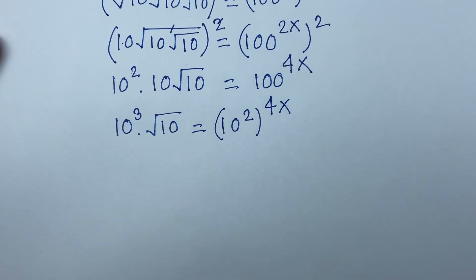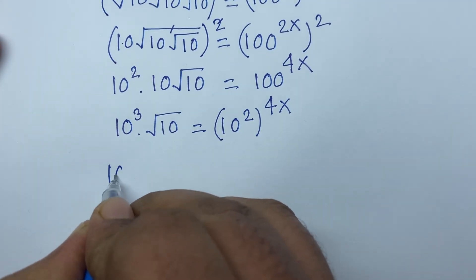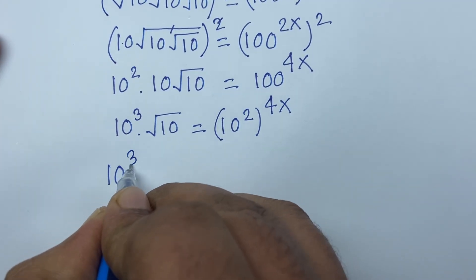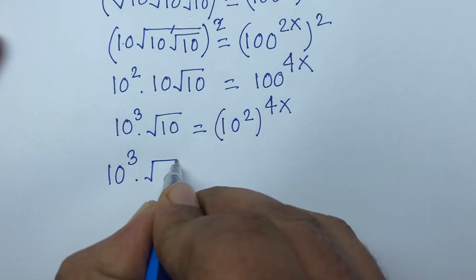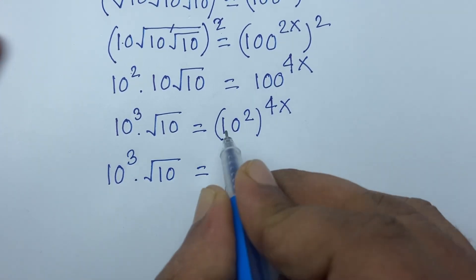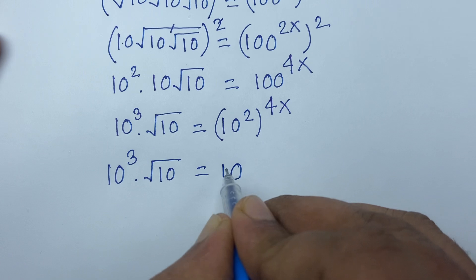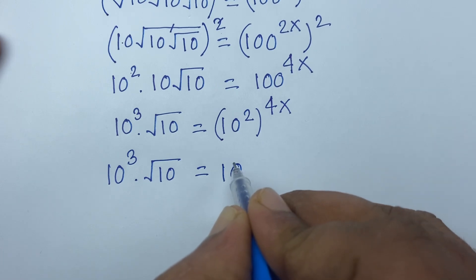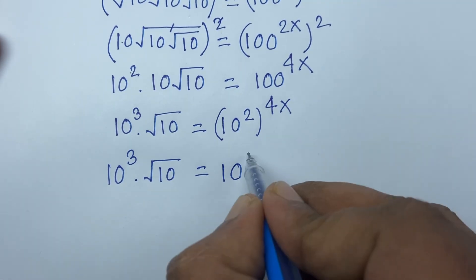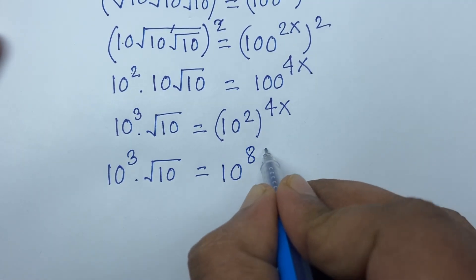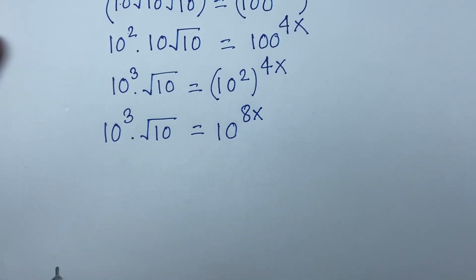I can see here is 10 to the power 3 times square root of 10, and according to exponential laws 2 times 4x will be 8x.